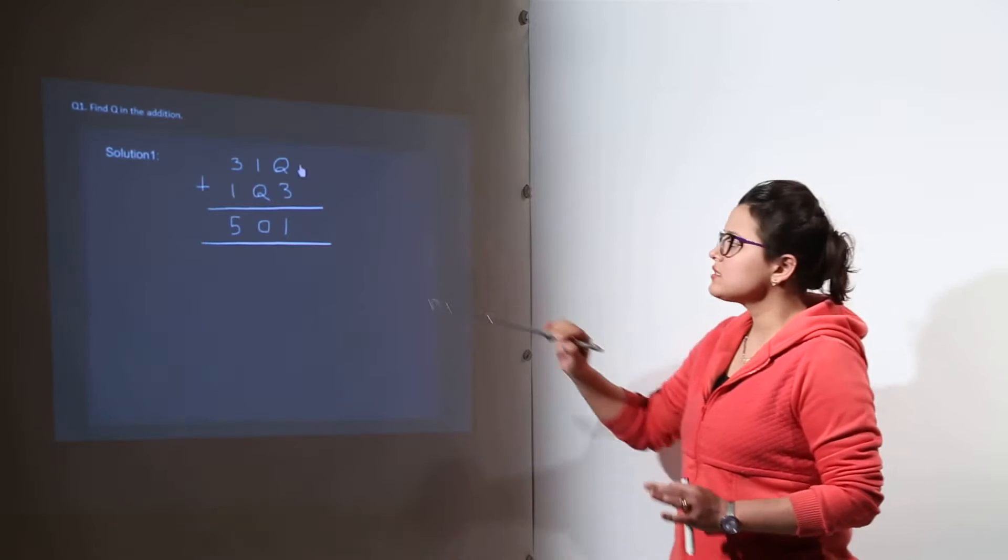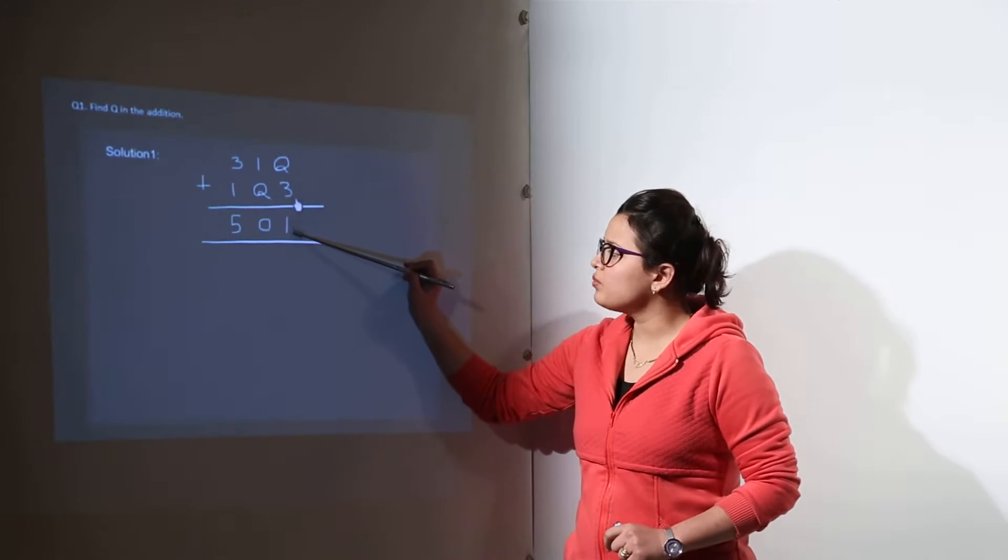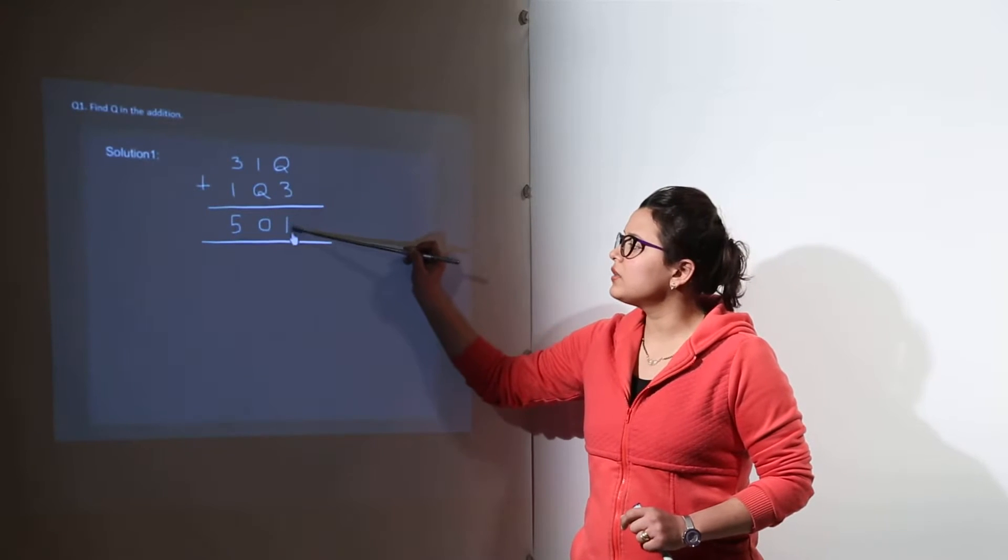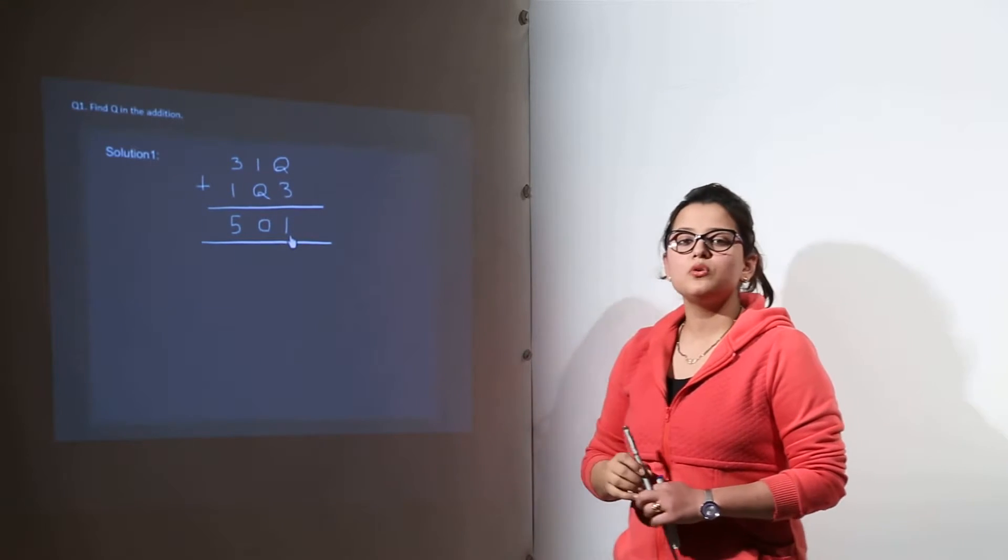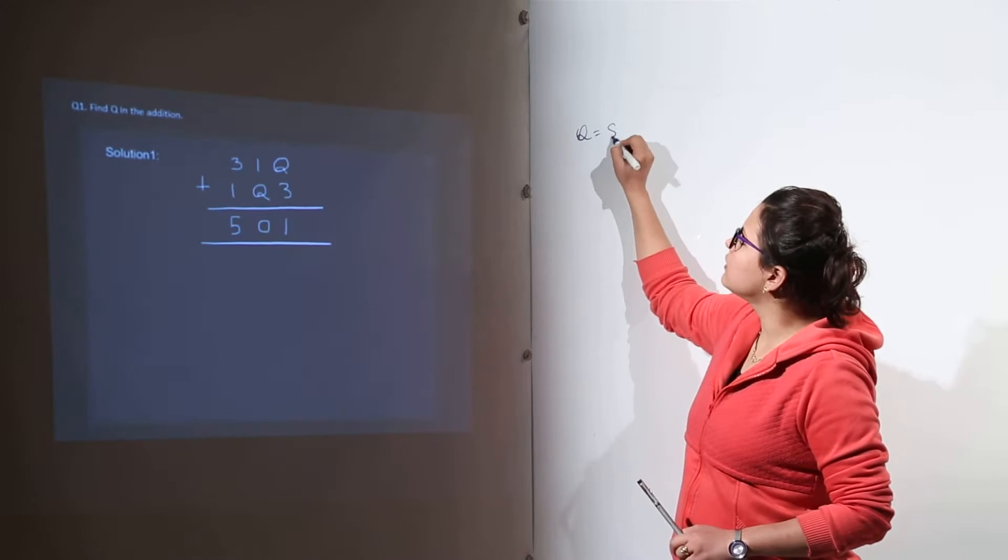Now out of this, just put the logic over here. q plus 3 should be giving you 1. What should be the value of q such that you get 1 over here? I know directly that q has to be put equal to 8. Why 8?